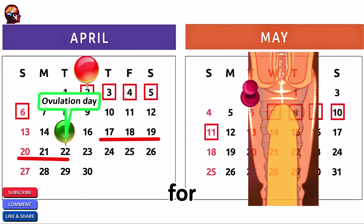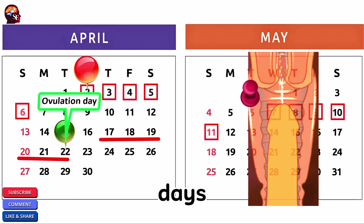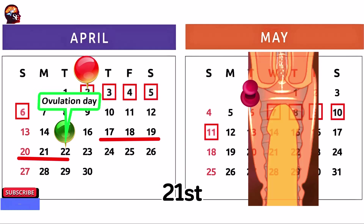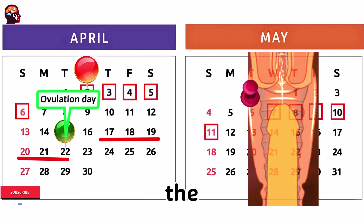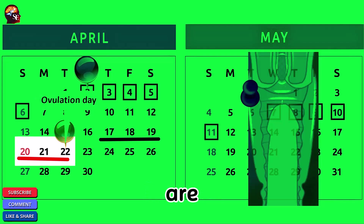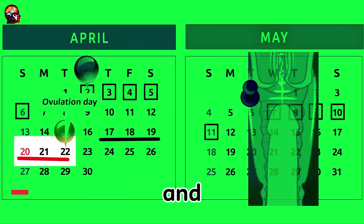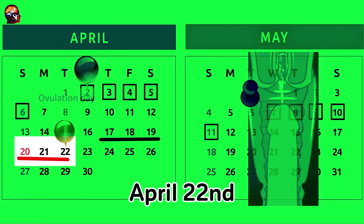So, for a 35-day cycle, the 3 peak fertile days are the 19th, 20th, and 21st days of the cycle. In this example, the 3 days of maximum fertility are April 20th, April 21st, and the day of ovulation, April 22nd.